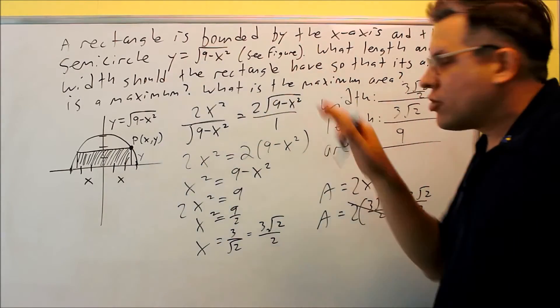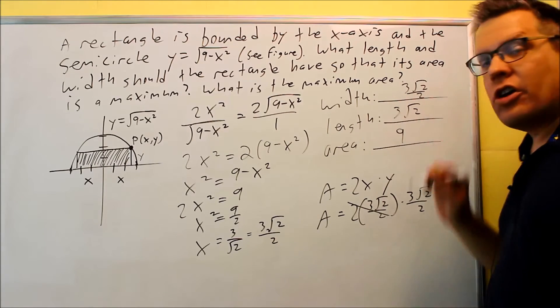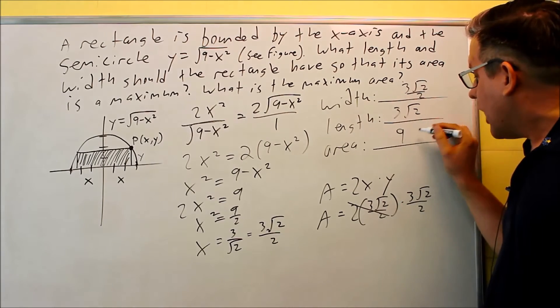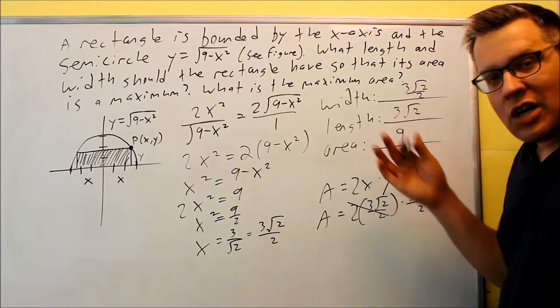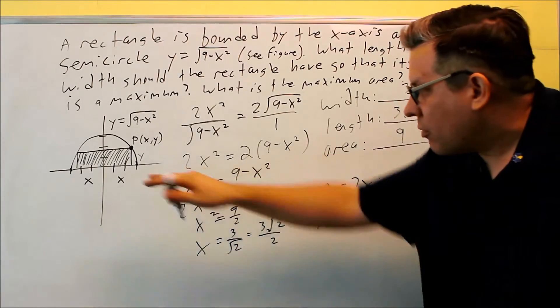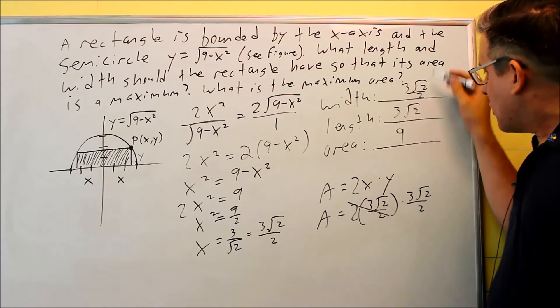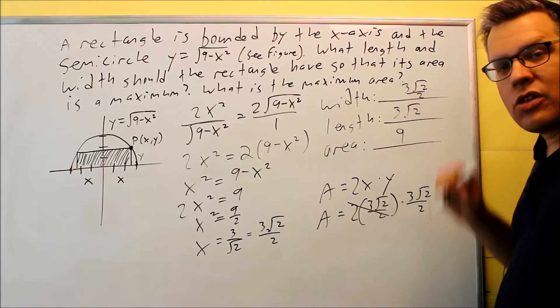Because there's no dimensions given on the original problem, we don't need to put any units on here. The only thing you could put for that is you could put 9 square units, and then each of these could be a unit, but it's not necessary because there was no dimensions given on the original problem. So these would be your three answers, the width, the length, and the area.